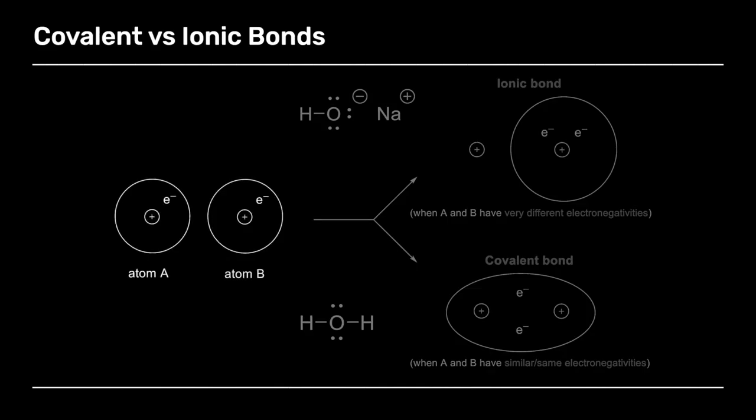If their electronegativities are substantially different, then the atom which has a higher electronegativity is going to steal an electron from the other. In other words, an ionic bond is unequal sharing of electrons that creates a positive and a negative charge, like this general example shown over here.